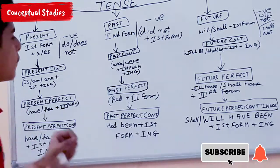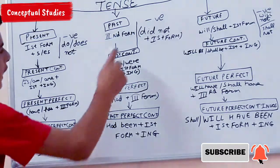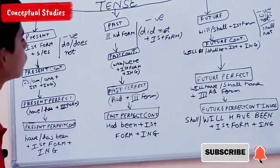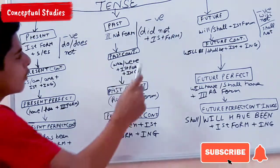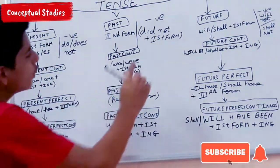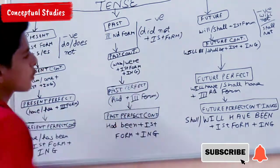Secondly, for Past tense: if the sentence is positive, we use the second form of the verb. If the sentence is negative, then we use 'did not' plus the first form.